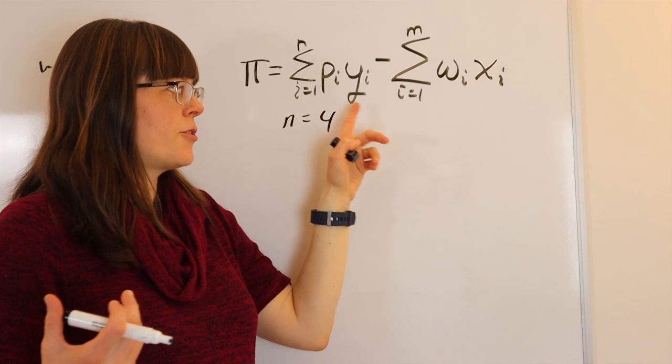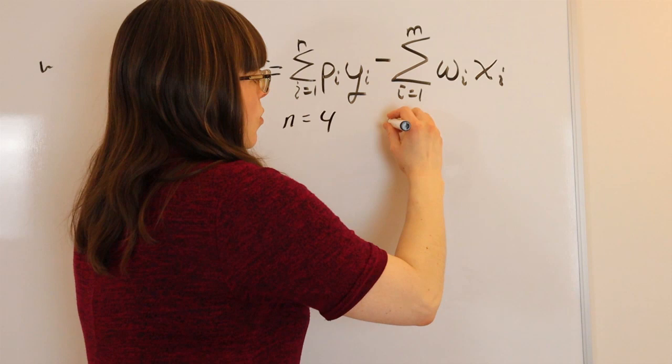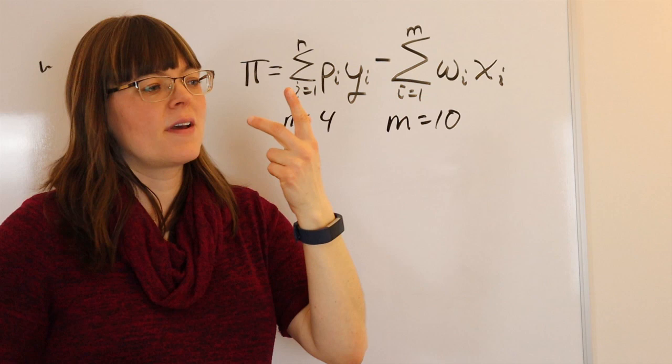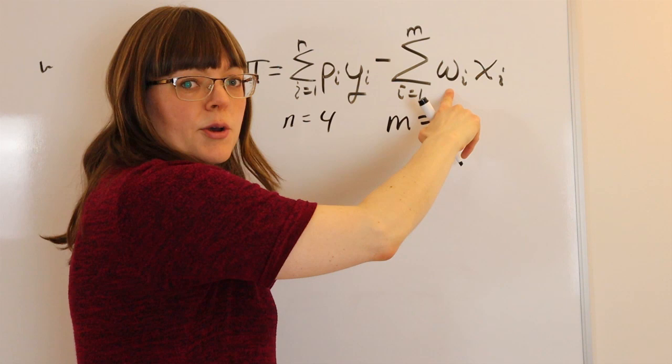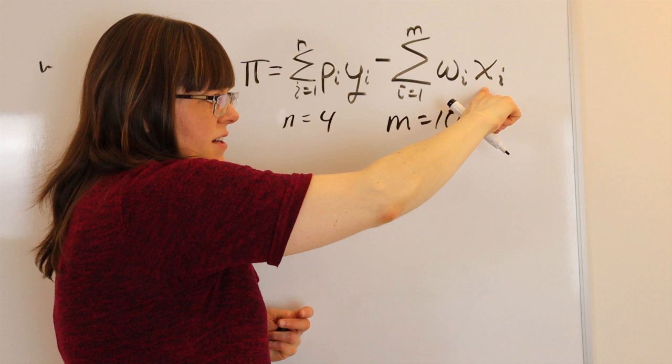So m might equal 10, where m includes cheese, sour cream, taco shells, soft shell taco, flour things, lettuce, etc. So we have ten different things, each with their own price. It's an input price, which the textbook represents as w, times the quantity that we need in order to produce these products over here.